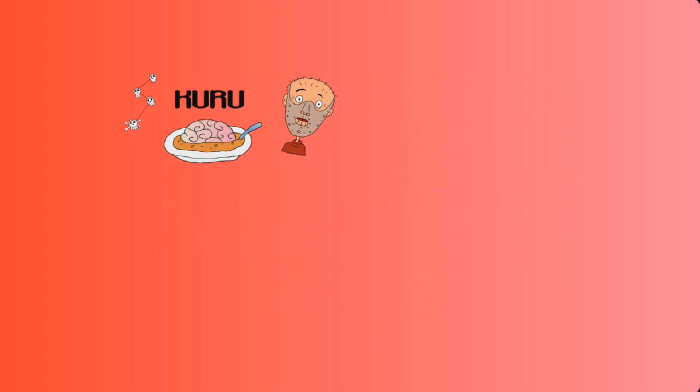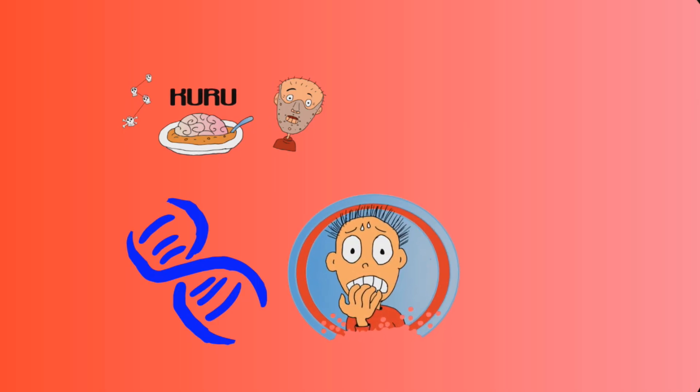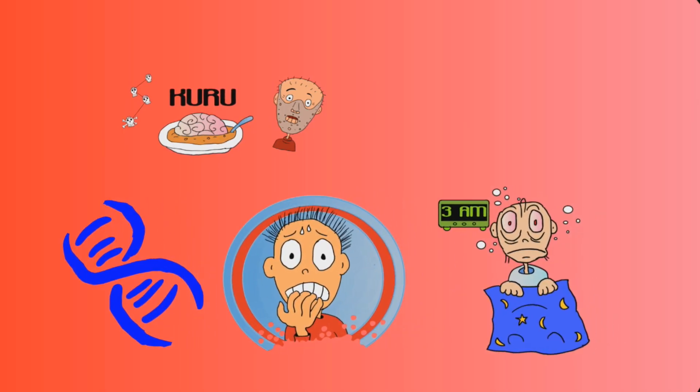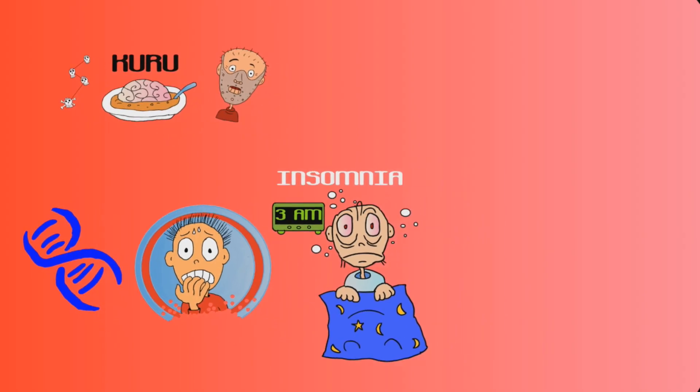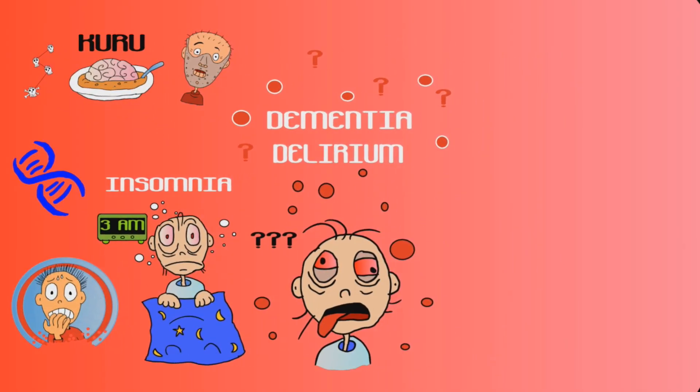There's also an even rarer genetic version. Personally, I think the genetic version is by far the scariest. It causes progressively worsening insomnia, which leads to delirium and a confused state of dementia. You get so sleepy that you go crazy and eventually die.